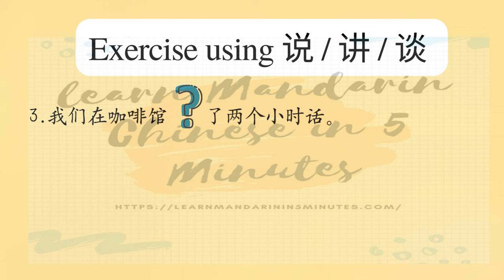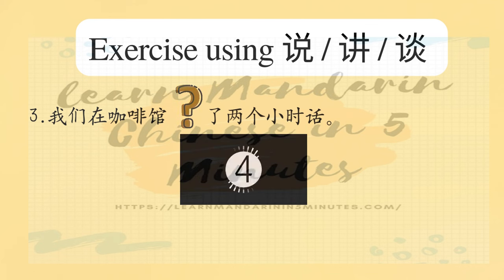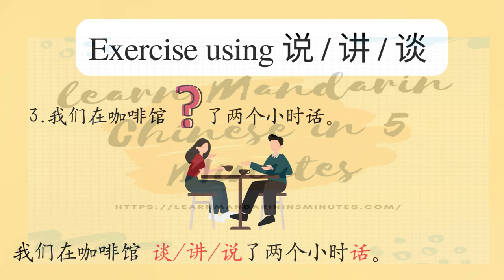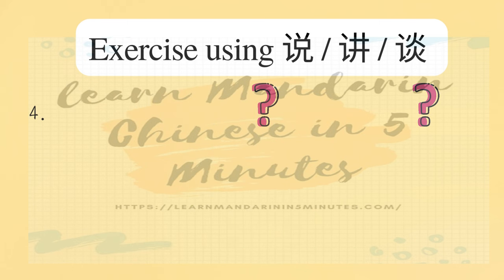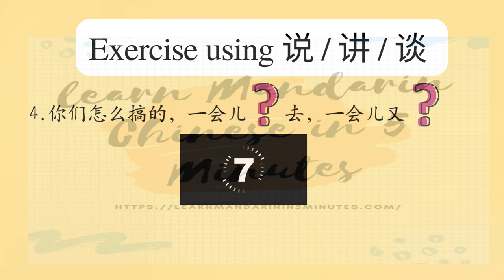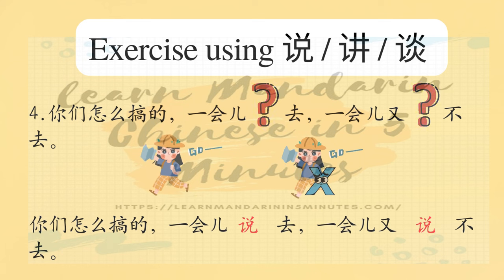Question 3: 我们在咖啡馆___了两个小时话。 Answer: 讲了两个小时话 or 说了两个小时话. Question 4: 你们什么搞的？一会儿___去，一会儿又___不去。 Answer: 一会儿说去，一会儿又说不去.